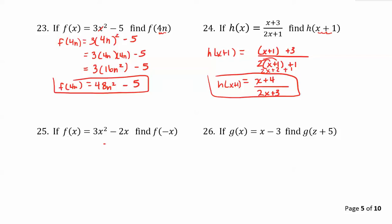In our next example, if f of x is equal to 3x squared minus 2x, find f of negative x. So this time I want to change all of the x's in f to negative x's. So f of negative x...